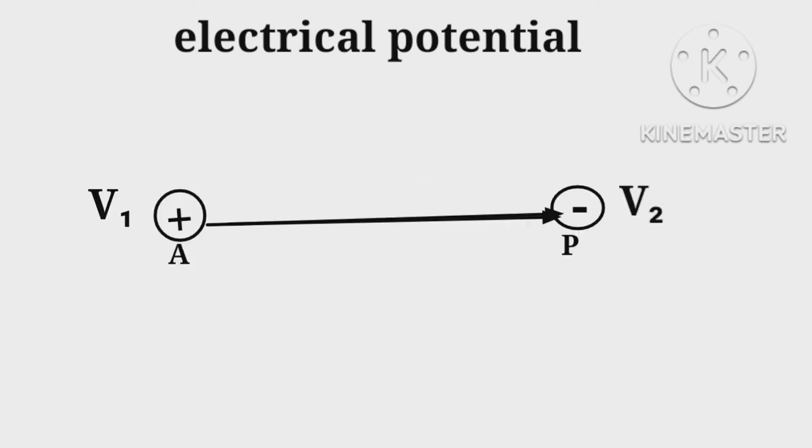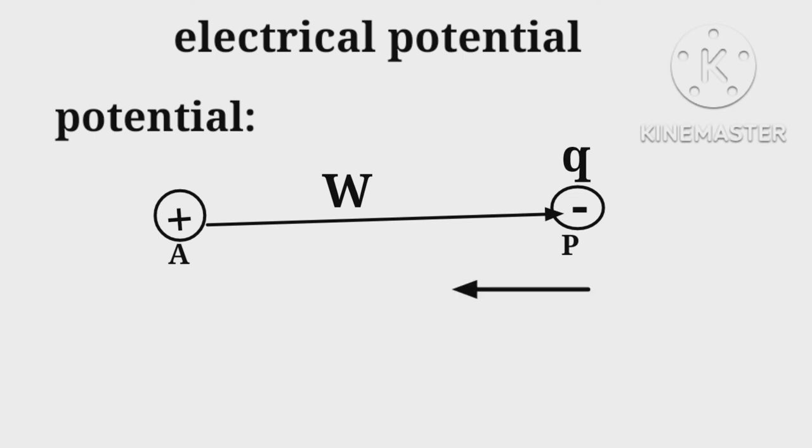Potential is defined as amount of work done in bringing a negative charge particle to a fixed point. When the same charge is brought from point A to point B, we call it potential difference (PD).